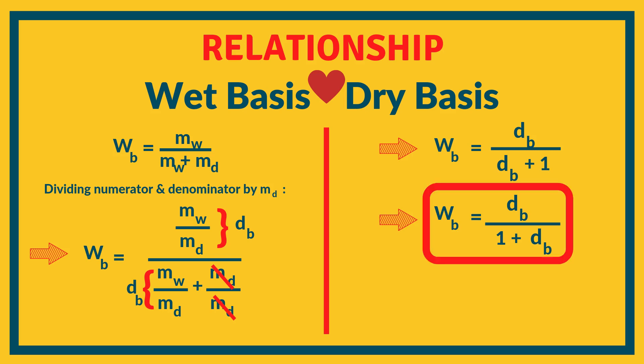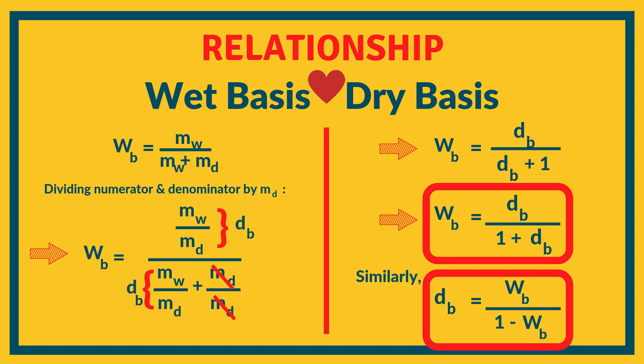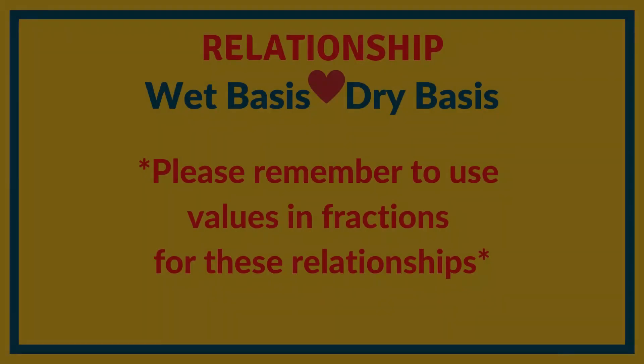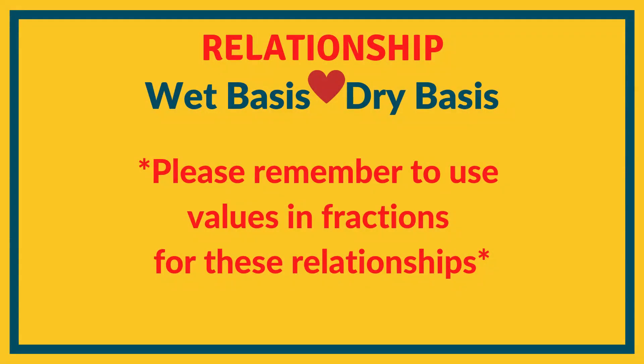So the relationship between wet basis and dry basis moisture content is: WB = db / (db + 1). And if we rewrite in terms of dry basis: DB = wb / (1 - wb). We can calculate wet basis if dry basis is given and vice versa. Please remember that in this relationship also, we do not use percentage directly — we convert it to a fraction first. For example, 38 percent becomes 0.38, and we put 0.38 into the formula.